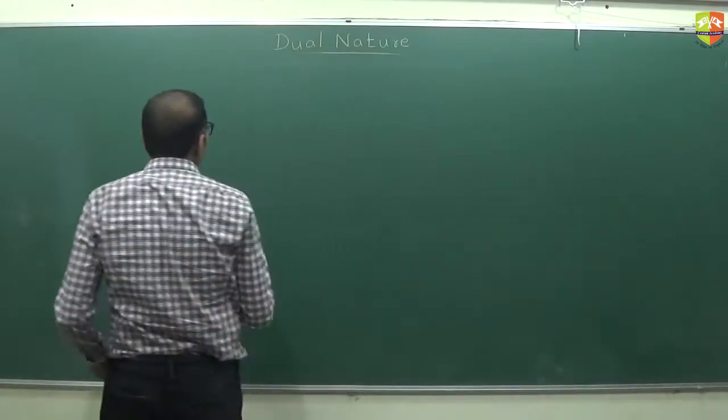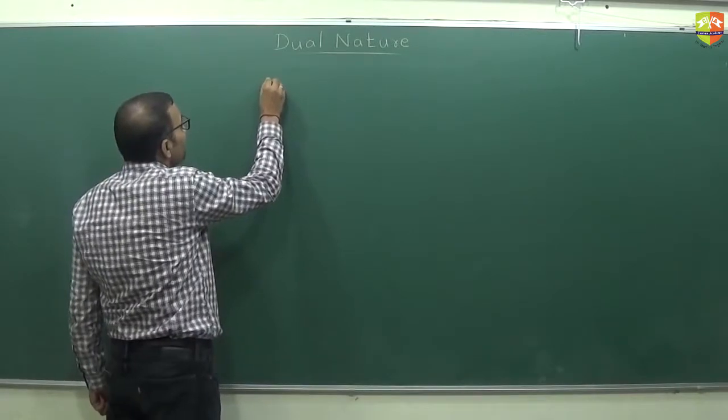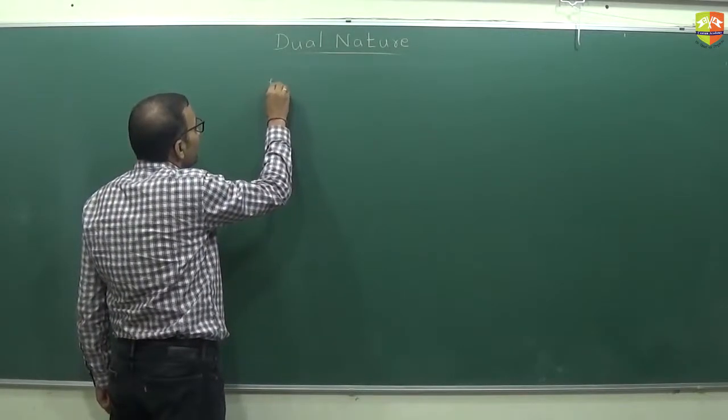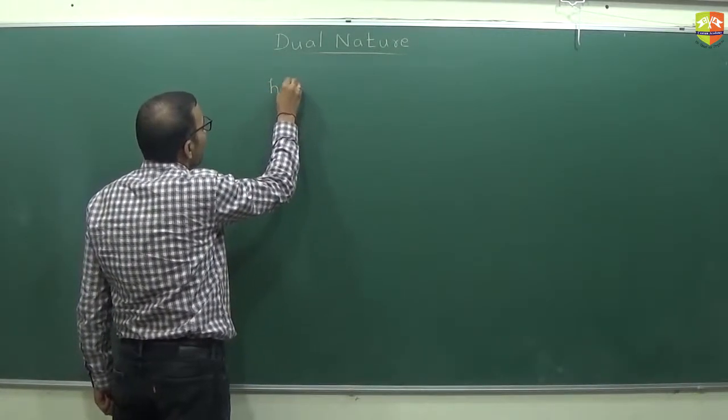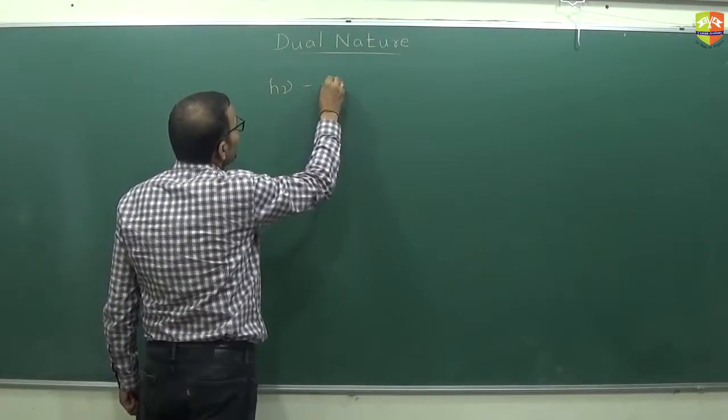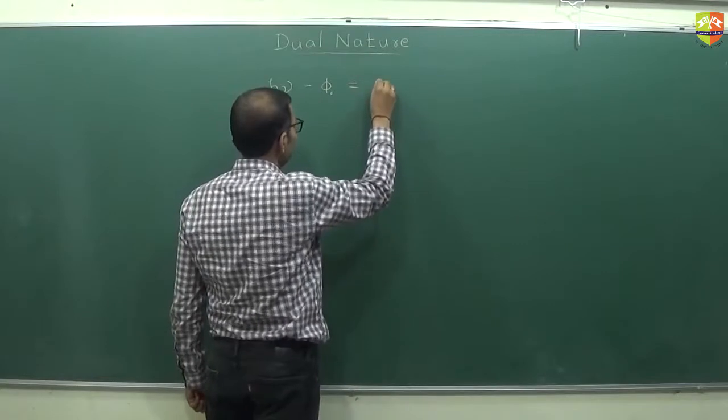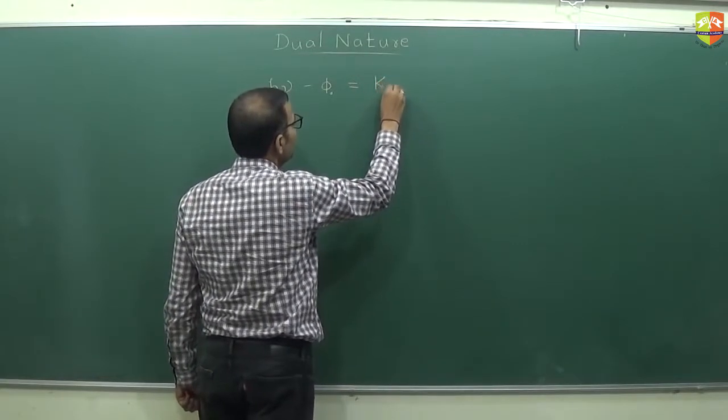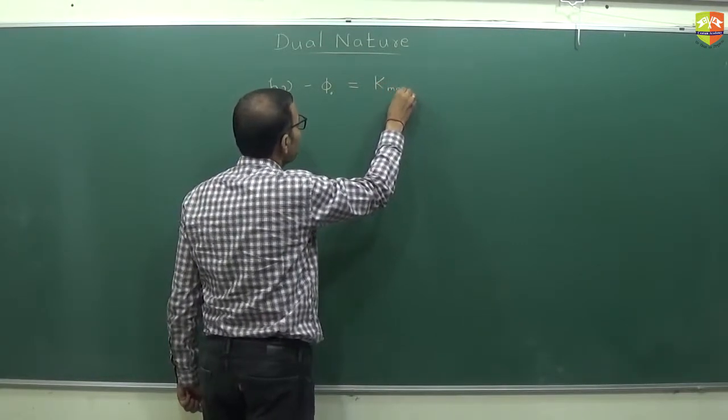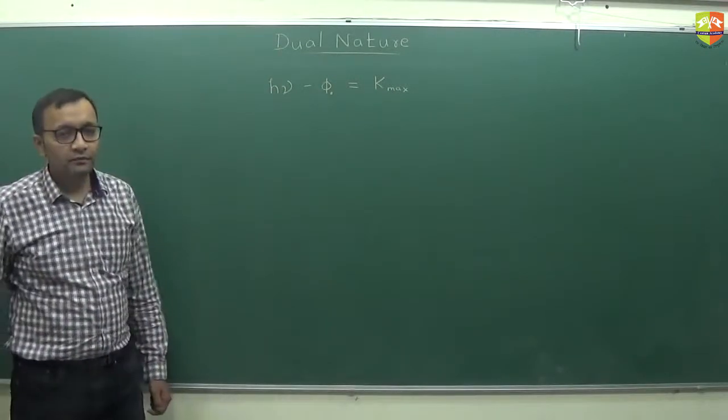So, Einstein has given this equation, write down: h times mu minus phi naught is equal to k max. Write down, then we will discuss.